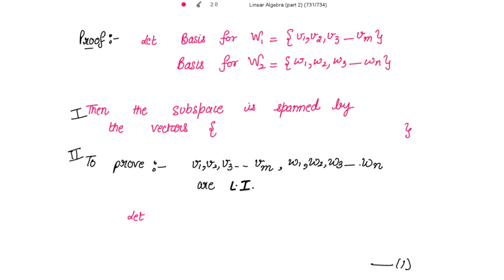These are the bases. Then the subspace W1 plus W2 is spanned by the vectors v1, v2, v3, up to vm, then w1, w2, w3, up to wn. So this subspace is spanned by all these vectors. The first thing is done — that W1+W2 is spanned by all these vectors. Now we are required to prove that all these vectors are linearly independent.